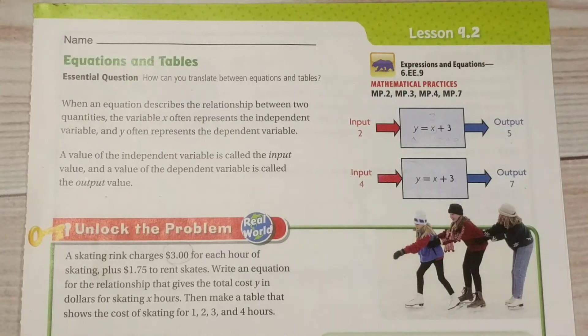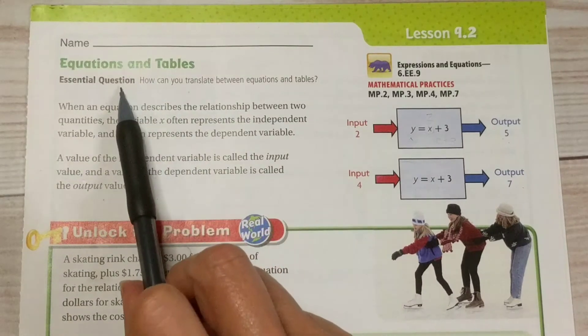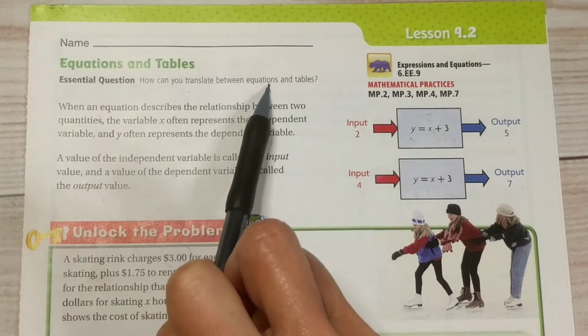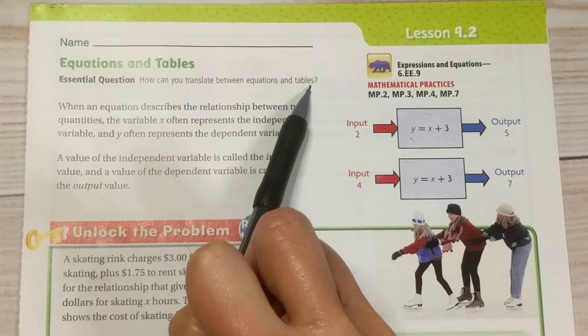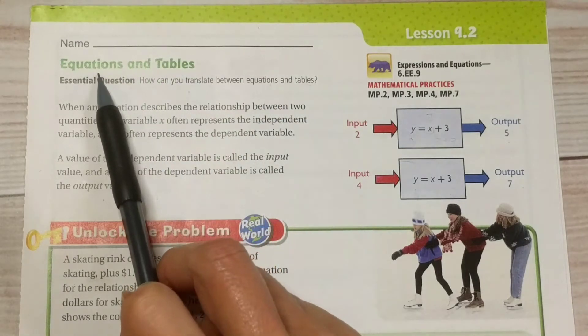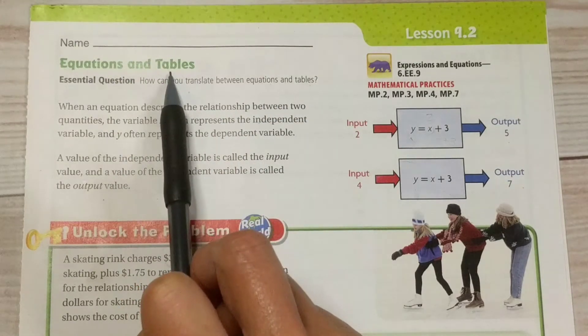All right, today's lesson is 9.2, which can be found on page 361 of your textbook. Our essential question for today is, how can you translate between equations and tables? So we're finding the relationship between equations and tables today for our lesson.